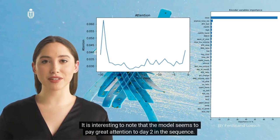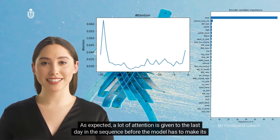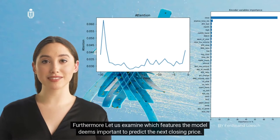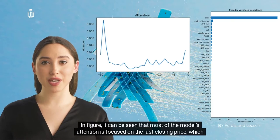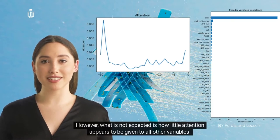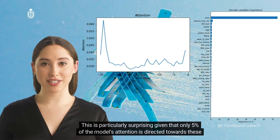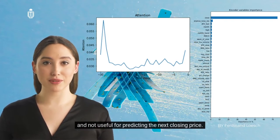The model seems to pay great attention to day 2 in the sequence, and as expected, a lot of attention is given to the last day before the model makes its prediction. Examining which features the model deems important, most of the model's attention is focused on the last closing price, which was expected. However, surprisingly, only about five percent of the model's attention is directed towards all other variables, suggesting the model considers most of the information in those variables to be noise not useful for predicting the next closing price.